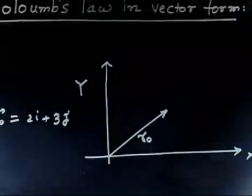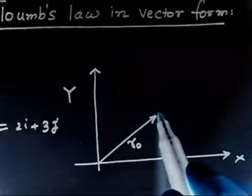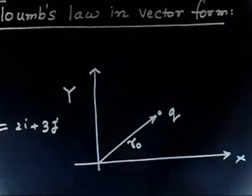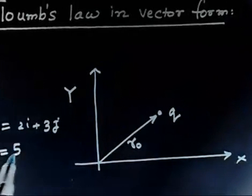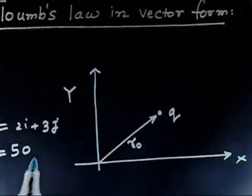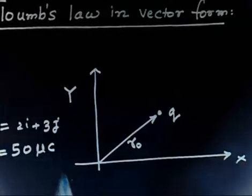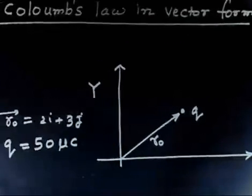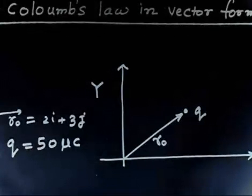And the charge located at this point, so there is a charge that is located at this point q. And the value of q is given. This is 50 microcoulomb. So the q is 50 microcoulomb located at r0.